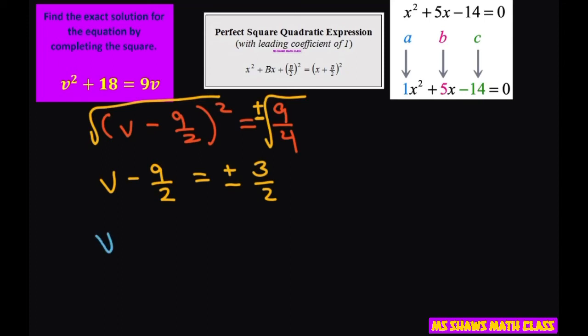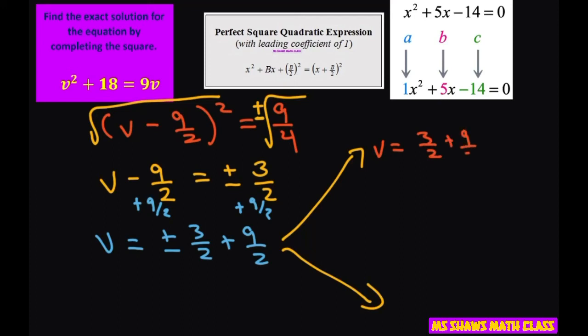So now we have v equals plus or minus 3 halves and we're going to add 9 halves to both sides. So let's put the 9 halves here. Now we're going to definitely split this up. So we're going to get v equals 3 halves plus 9 halves and we also have v equals negative 3 halves plus 9 halves.